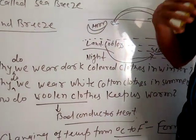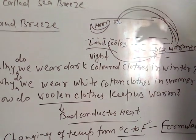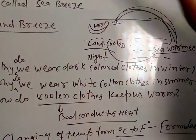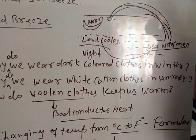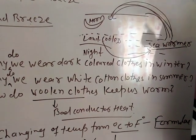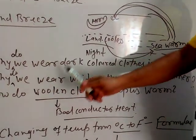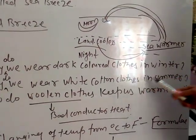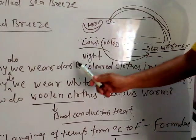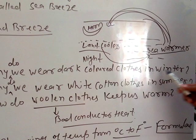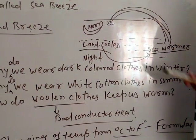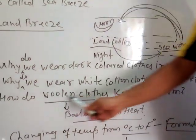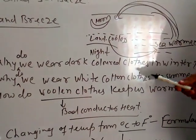On the other hand, we wear white cotton clothes in the summer season because white cotton clothes are reflectors of heat and bad conductors of heat. Heat is not absorbed from outside, and our body remains cool. That is why we wear white cotton clothes in summer and dark colored clothes in winter.